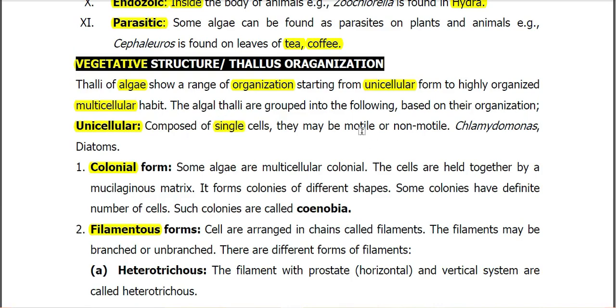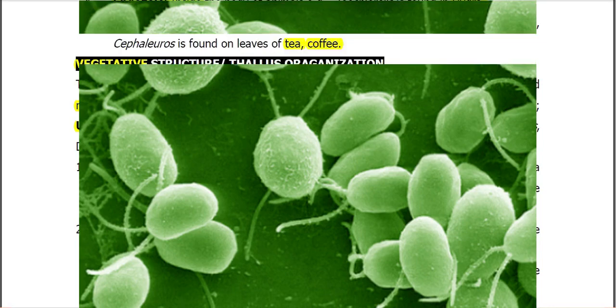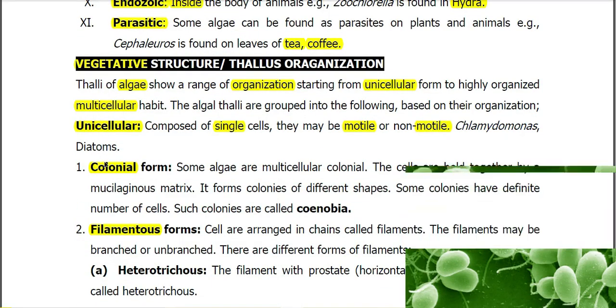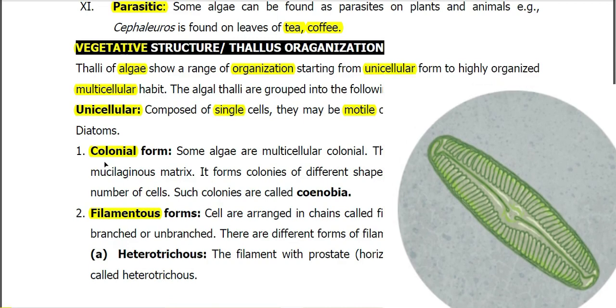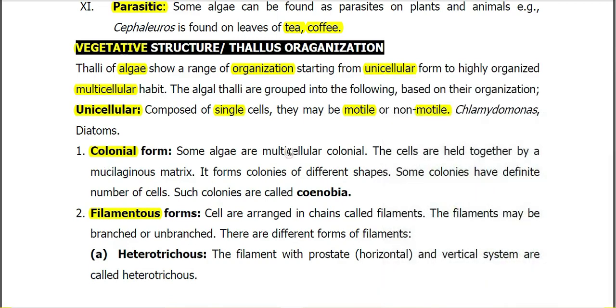Unicellular algae are mostly composed of single cells. They may be motile, in the form of Chlamydomonas, or they may be non-motile, such as in Pinnularia or diatoms.